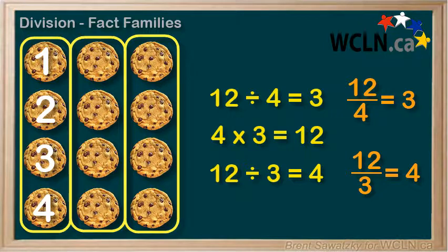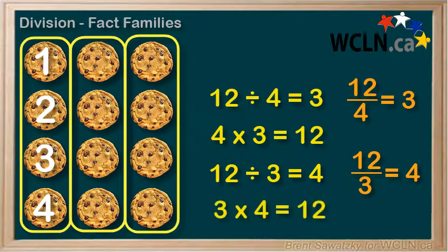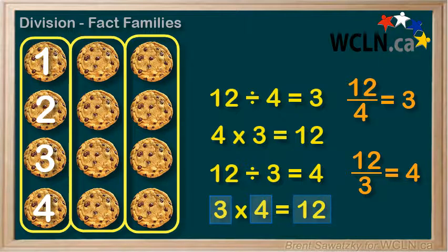Thinking back to our times tables again, 3 times 4 equals 12. And that makes sense. It's just 4 times 3 switched around. If we knew that we had 3 friends, and each friend had 4 cookies, we can multiply them. To know that there's a total of 3 friends times 4 cookies per friend equals a total of 12 cookies.